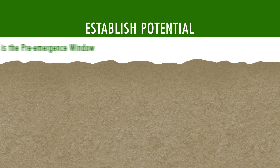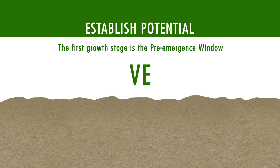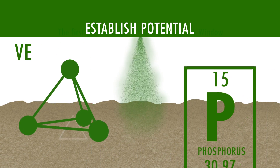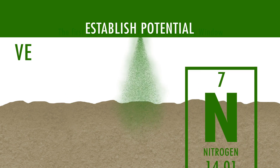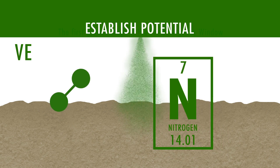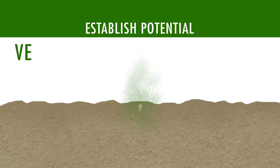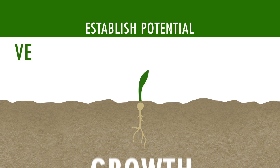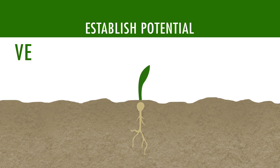The first growth stage of corn is the pre-emergence window. During this stage, applications are timed correctly to increase phosphorus uptake in the future corn plant, as well as protect nitrogen in the soil. At planting time, this critical early growth stage is maximized with enhanced starters and growth-promoting compounds. The result is stronger standing corn and a larger number of ears per acre.